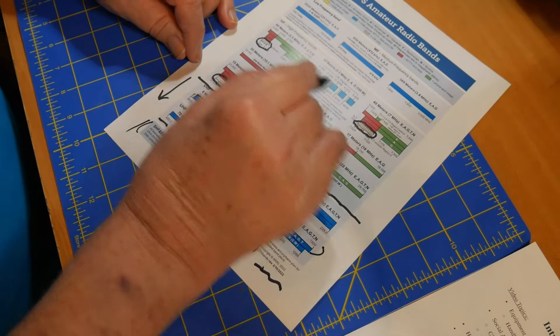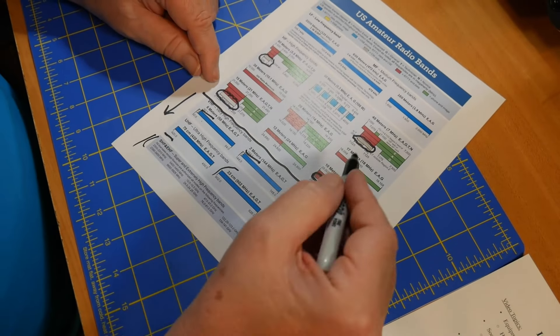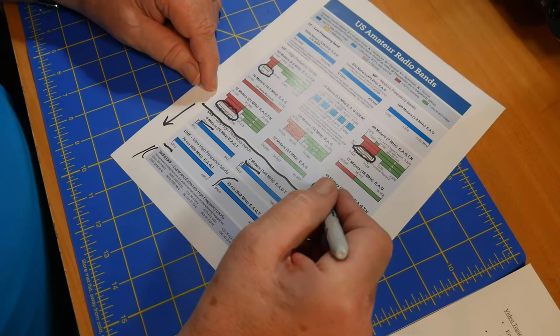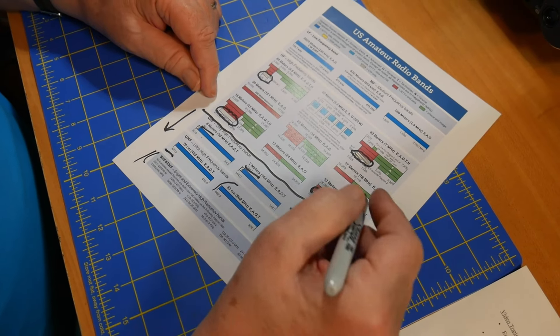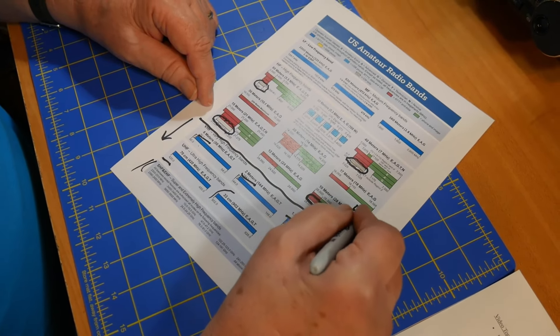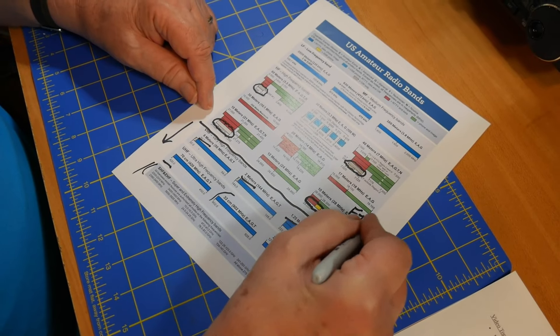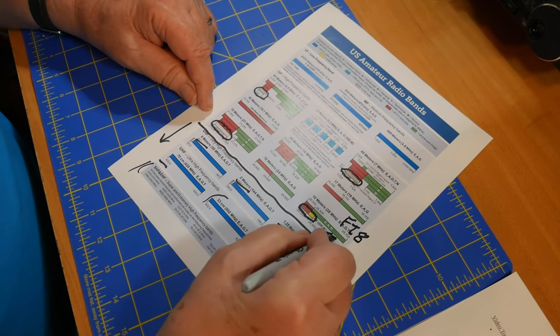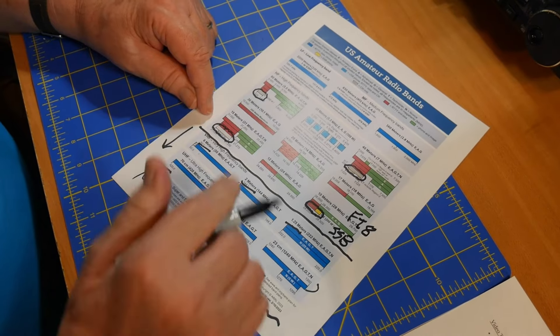Up on HF, you can do these things. On 10 meters, since this allows you everything that you can do, you can also do, besides CW, do FT8, and you can do single sideband and a radio that does that.